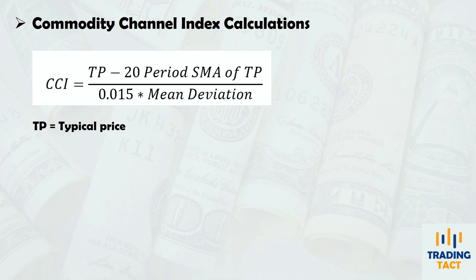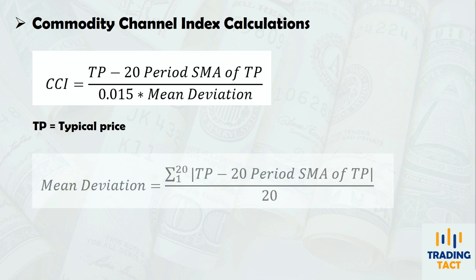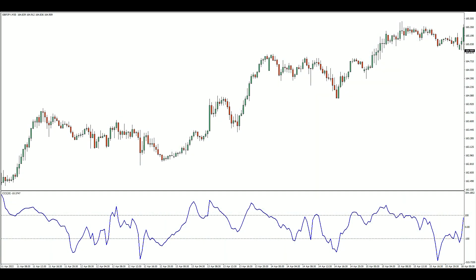Here is the calculation for a default 20-period CCI. The mean deviation is a measure of how far prices have moved away from their average. With the 20-period look-back, Lambert selected a 0.015 constant for the denominator such that the CCI would fall within the ±100 range 70-80% of the time.